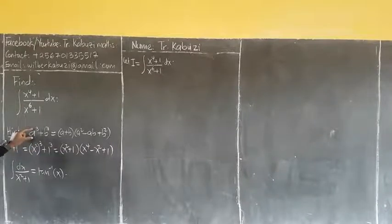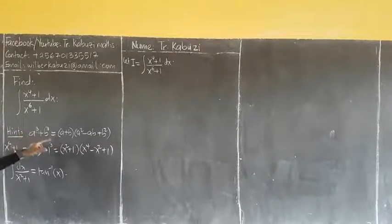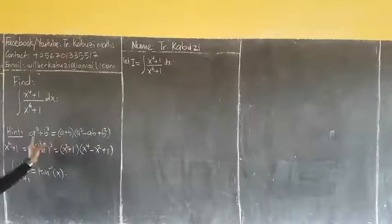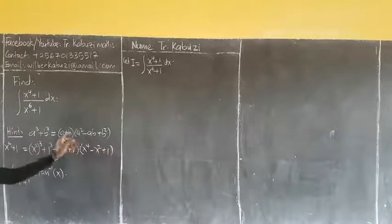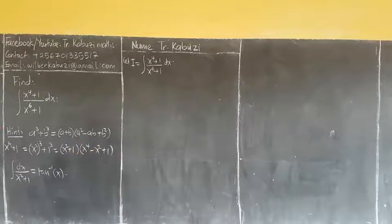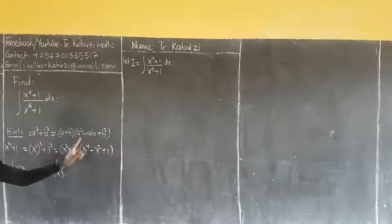We have a factorization technique: a³ plus b³ equals — you add a and b, then you square a, then times b, then b squared. This term is positive, this one is a minus.